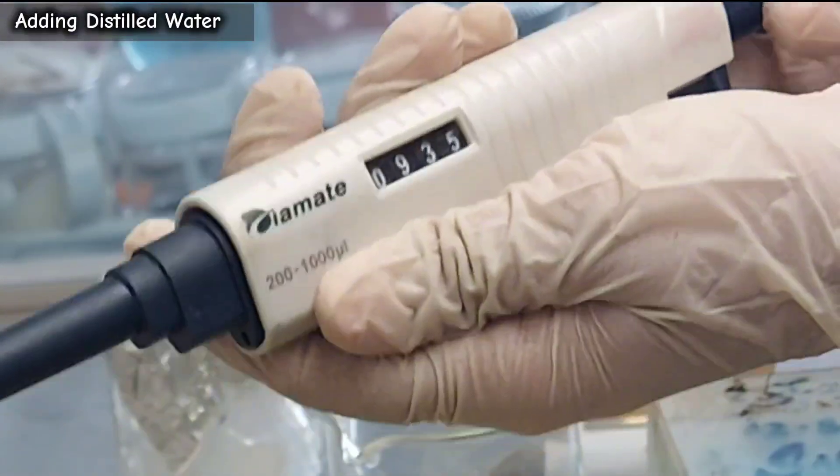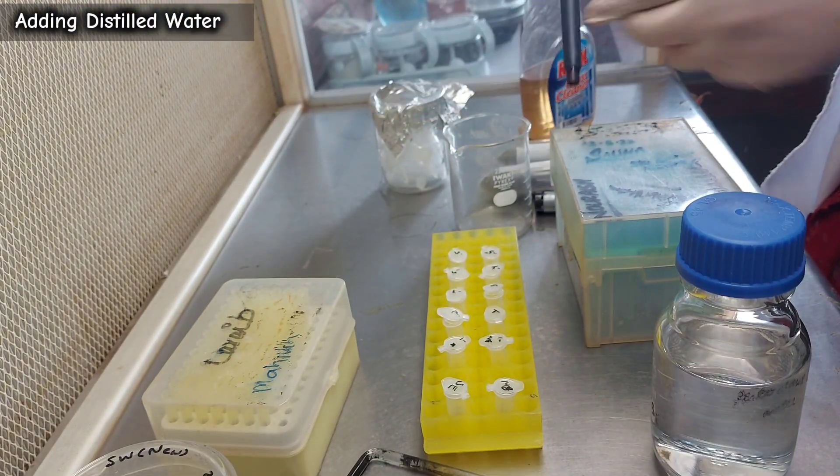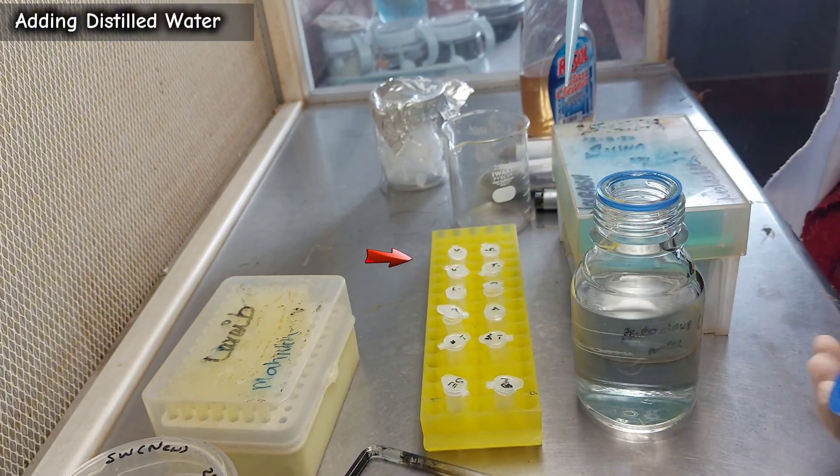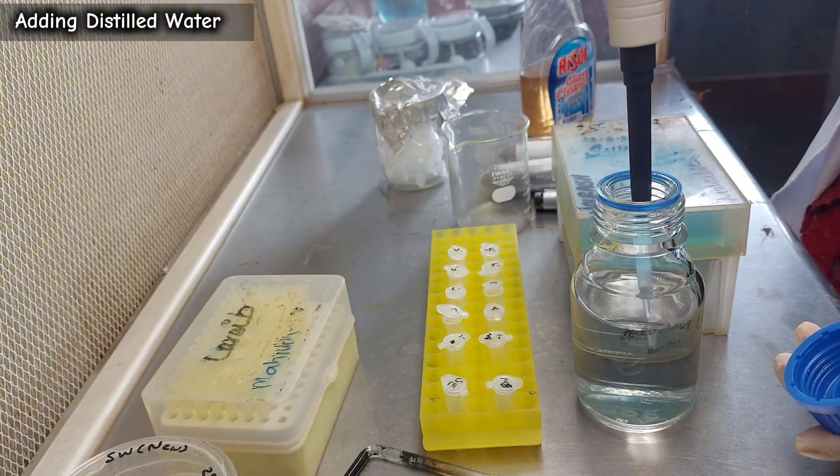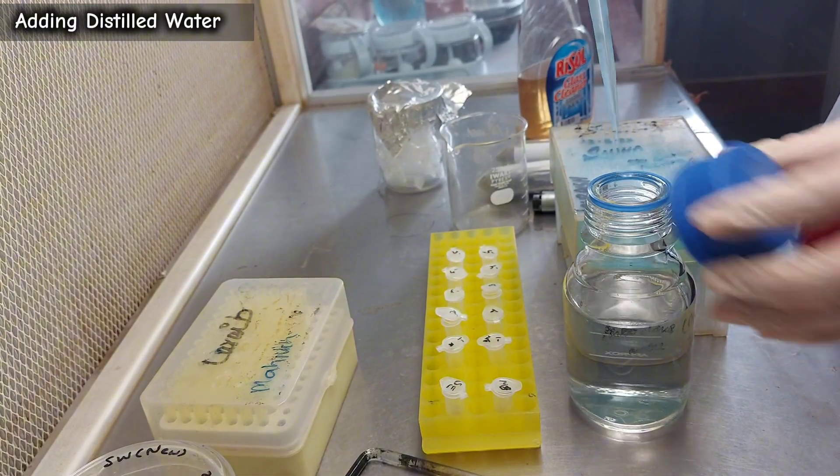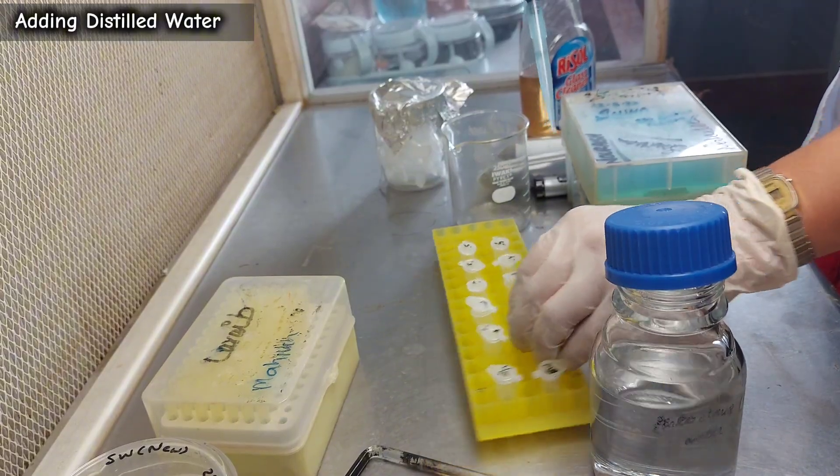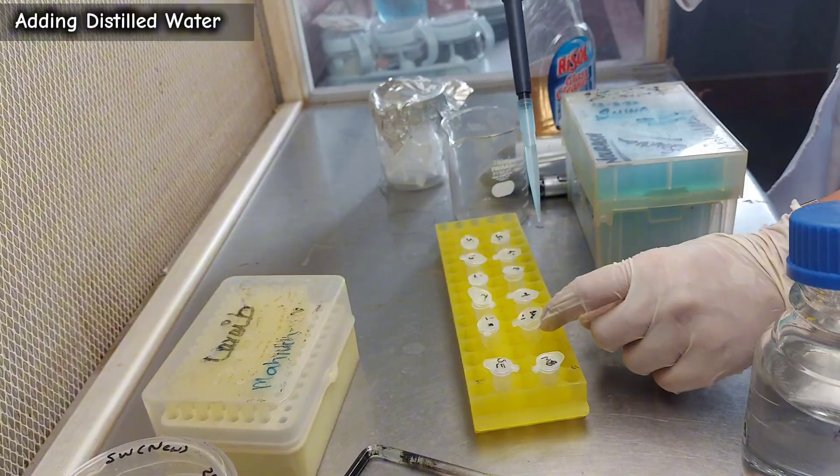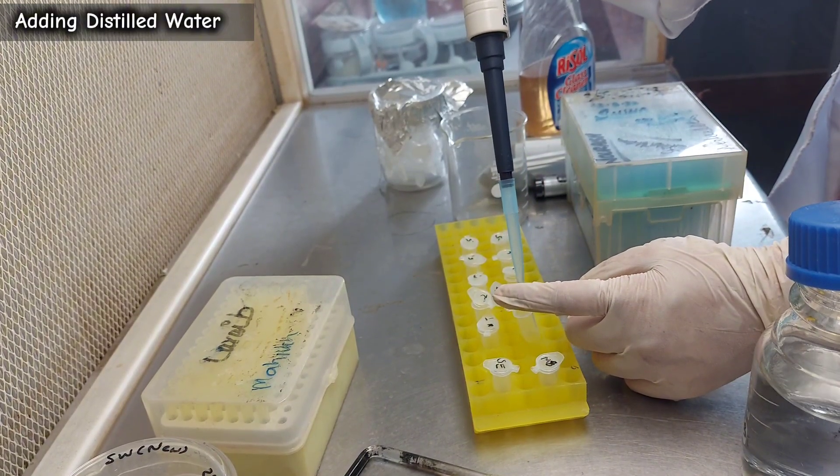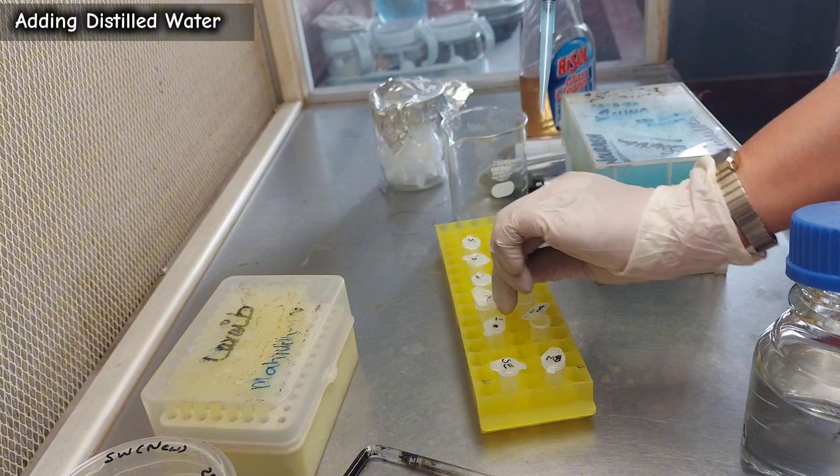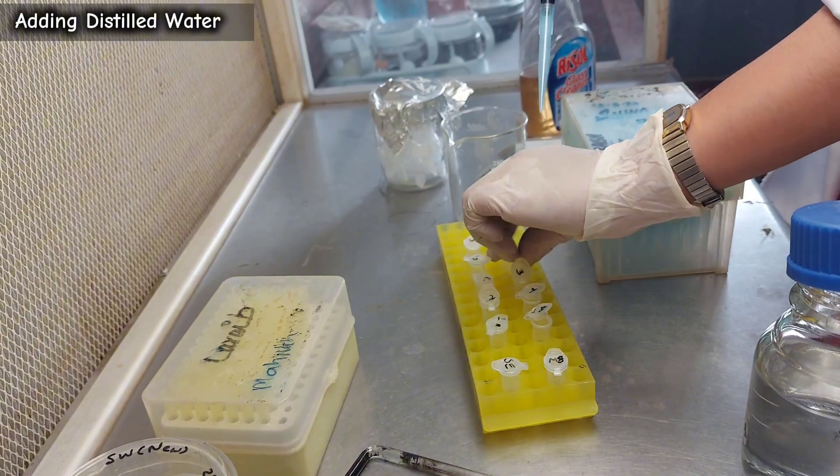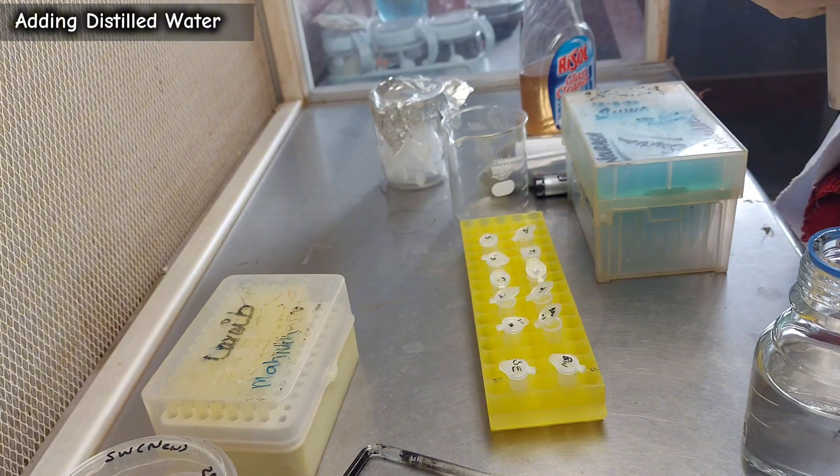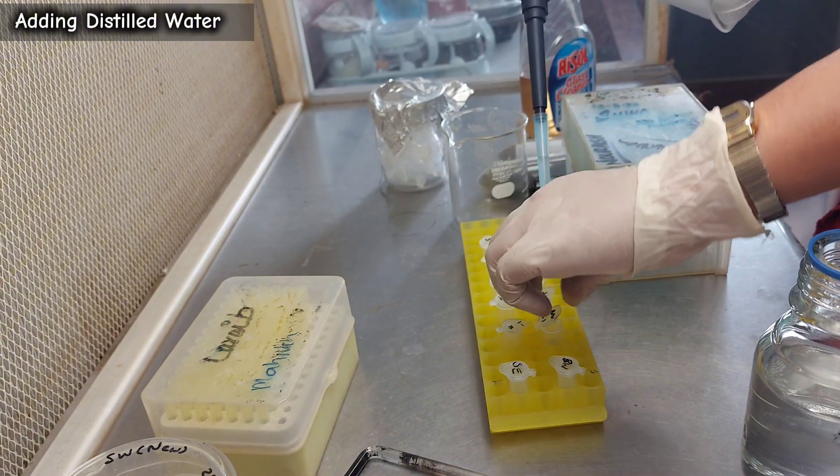Next, add 900 microliters of distilled water to each of the dilution tubes labeled 10 to the power of negative 1 to 10 to the power of negative 5. Tip: you can use the same tip for this step if you avoid touching it to any surfaces.